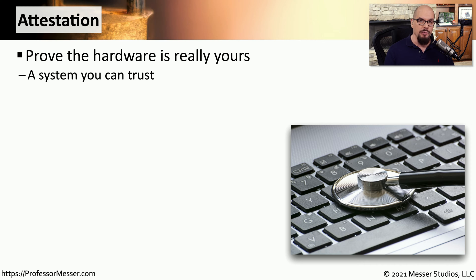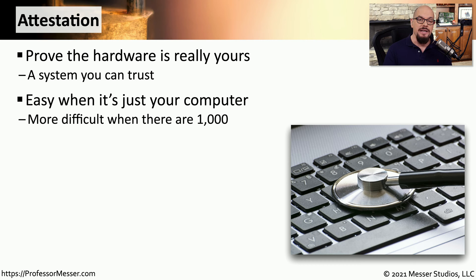These days, users can be located anywhere in the world, and they're often using a VPN or some other type of connectivity to gain access to our local network. As security professionals, we want to be sure that our users are connecting to our network using the hardware that we provided to them. We don't want them to use third party hardware and software to gain access to our internal network. To prove that the hardware they're connecting with is really the hardware we're expecting, we need to provide a functionality called attestation. When we have thousands of devices deployed to all of the users in our organization, we need some automated process to confirm that the hardware connecting into our network is trusted.